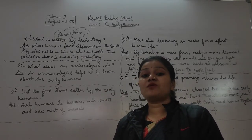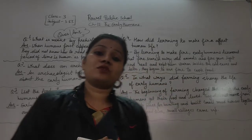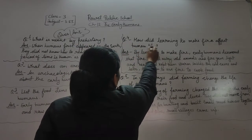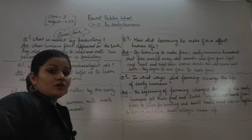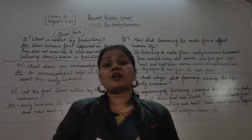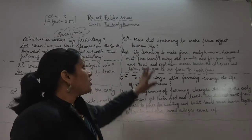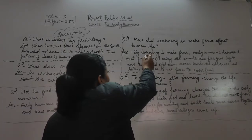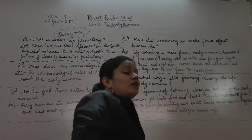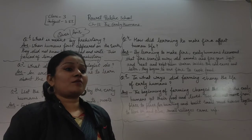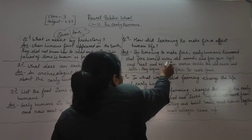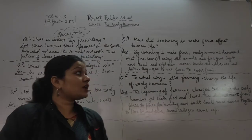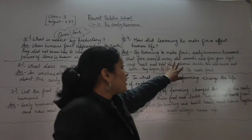Question number four: How did learning to make fire affect early humans' life? When early humans learned to make fire, they discovered that fire scared away wild animals. Early humans ko wild animals se darr lagta tha — jaise tiger, lion — and when those animals saw fire, they were scared and ran away.